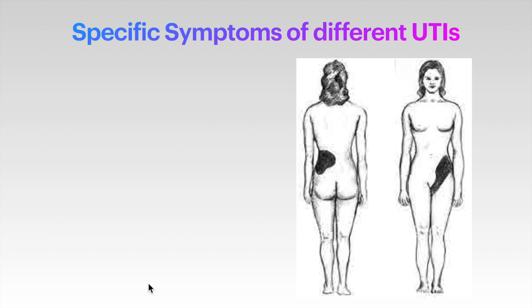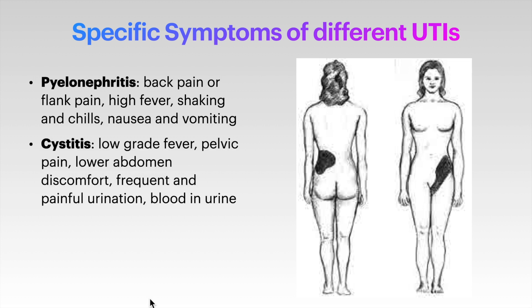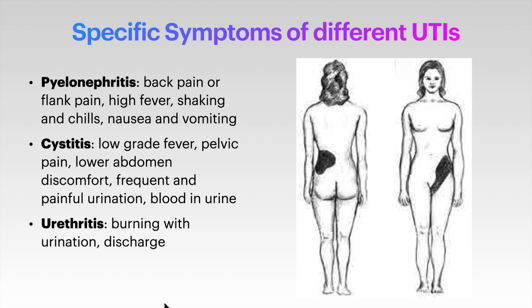There are specific symptoms that differentiate upper from lower UTI. During pyelonephritis — infection of the kidney and ureters — there can be back pain or flank pain associated with high-grade fever, shaking, chills, and nausea and vomiting. Infection of the bladder, cystitis, is associated with low-grade fever, pelvic pain, lower abdominal discomfort, frequent and painful urination, and sometimes blood in the urine. Urethritis typically presents with burning on urination and sometimes discharge.